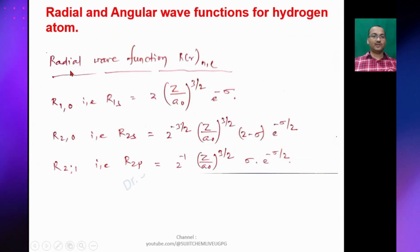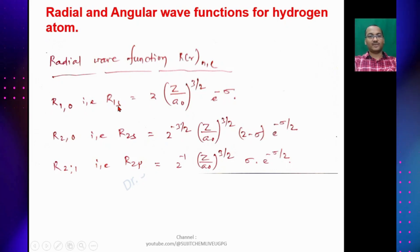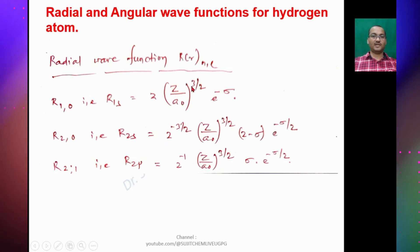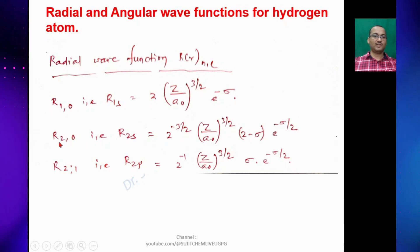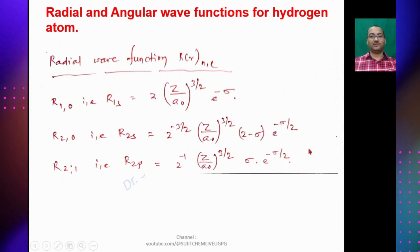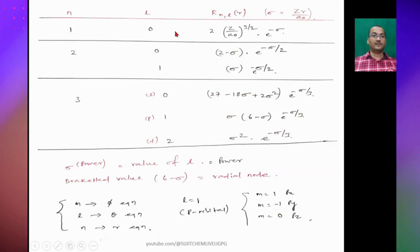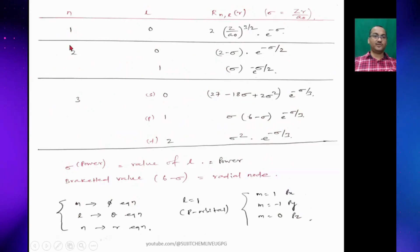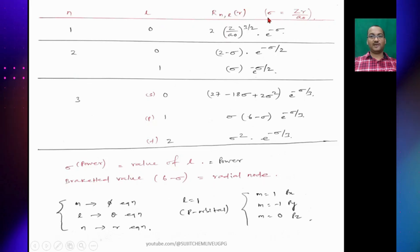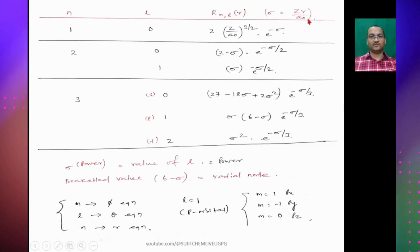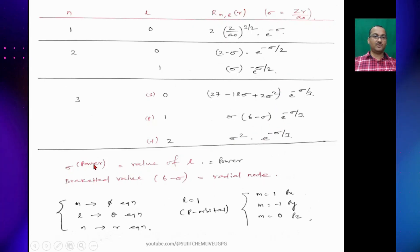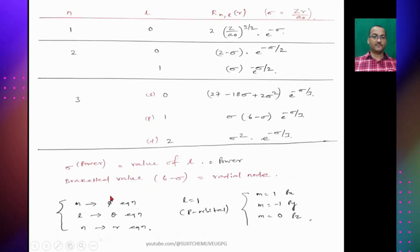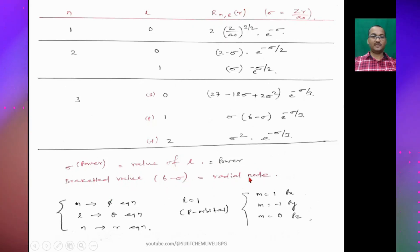Solving the radial wave function: R₁₀ (i.e., R_1s) = 2(Z/a₀)^(3/2) · e^(−σ), where σ = Zr/a₀. Similarly we can find R₂₀ and R₂₁ values, and for different values of n and l the R_nl values can be obtained. The power of σ gives the value of l, and the bracketed term gives the radial node, where the number of radial nodes = n − l − 1.